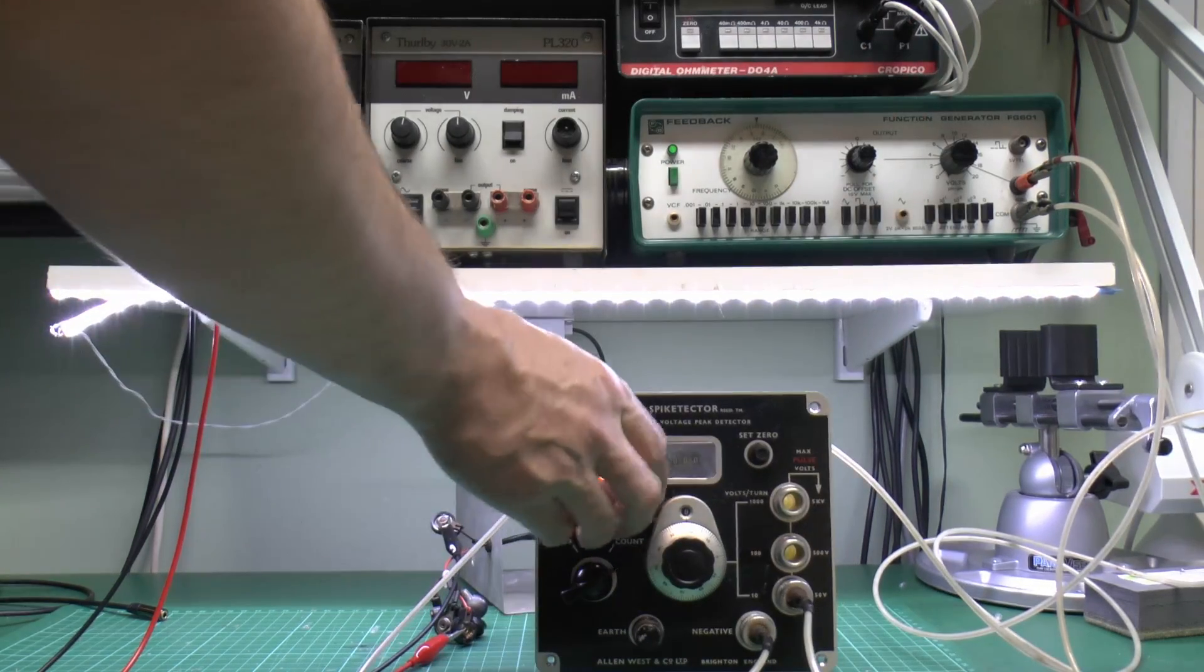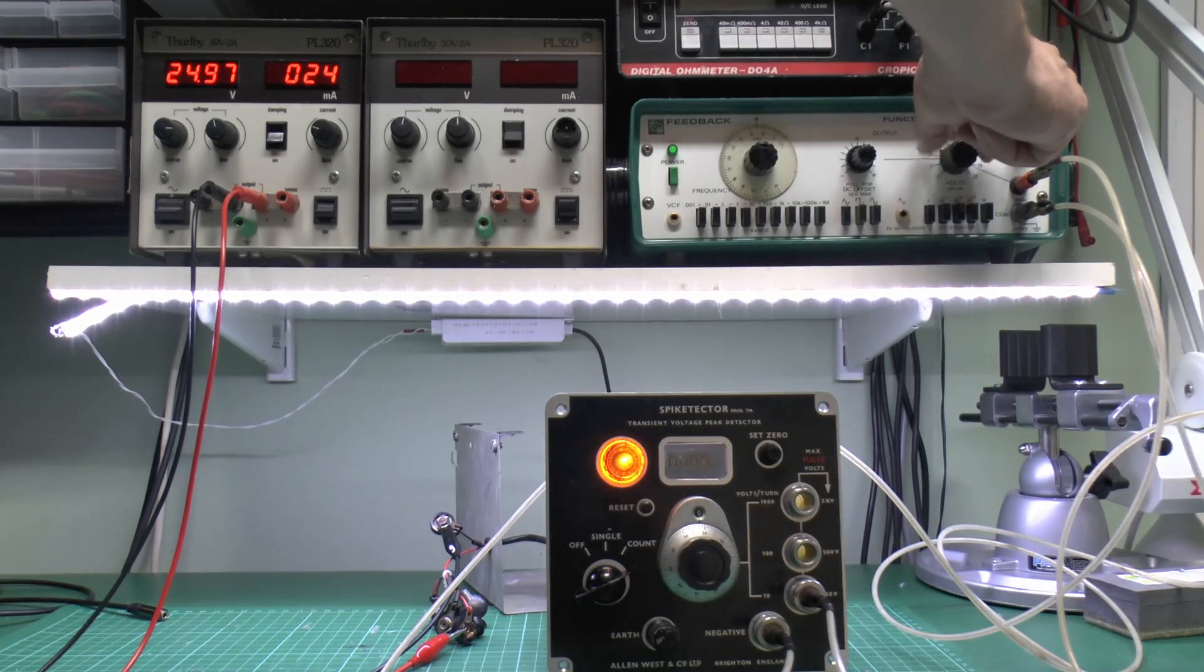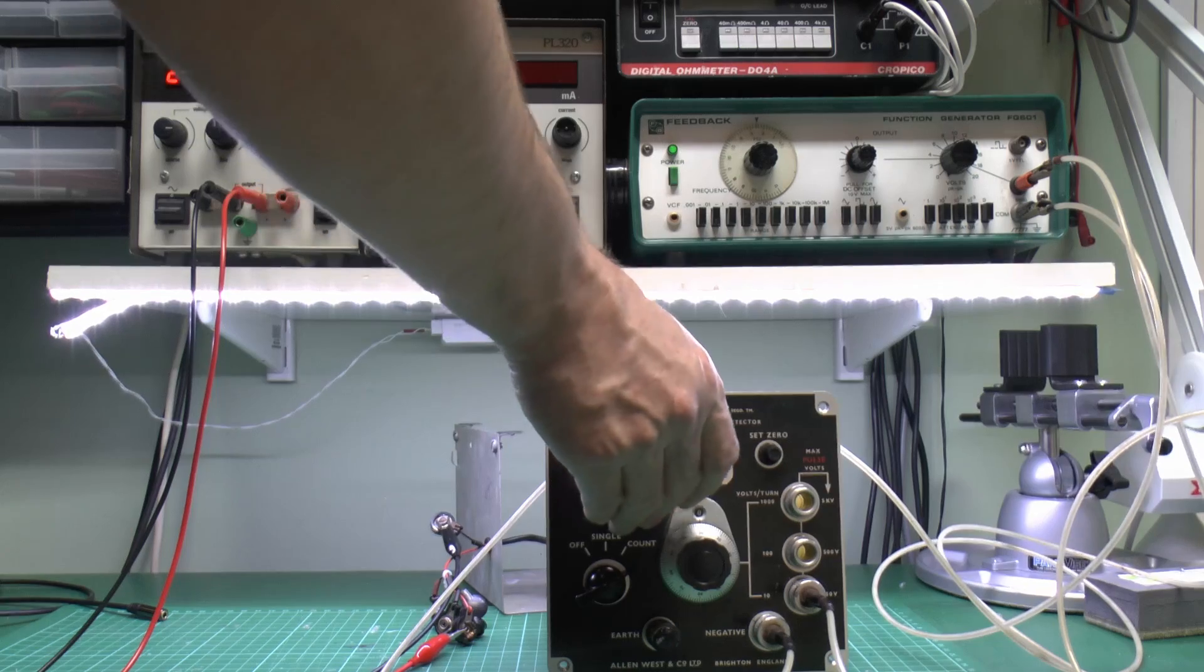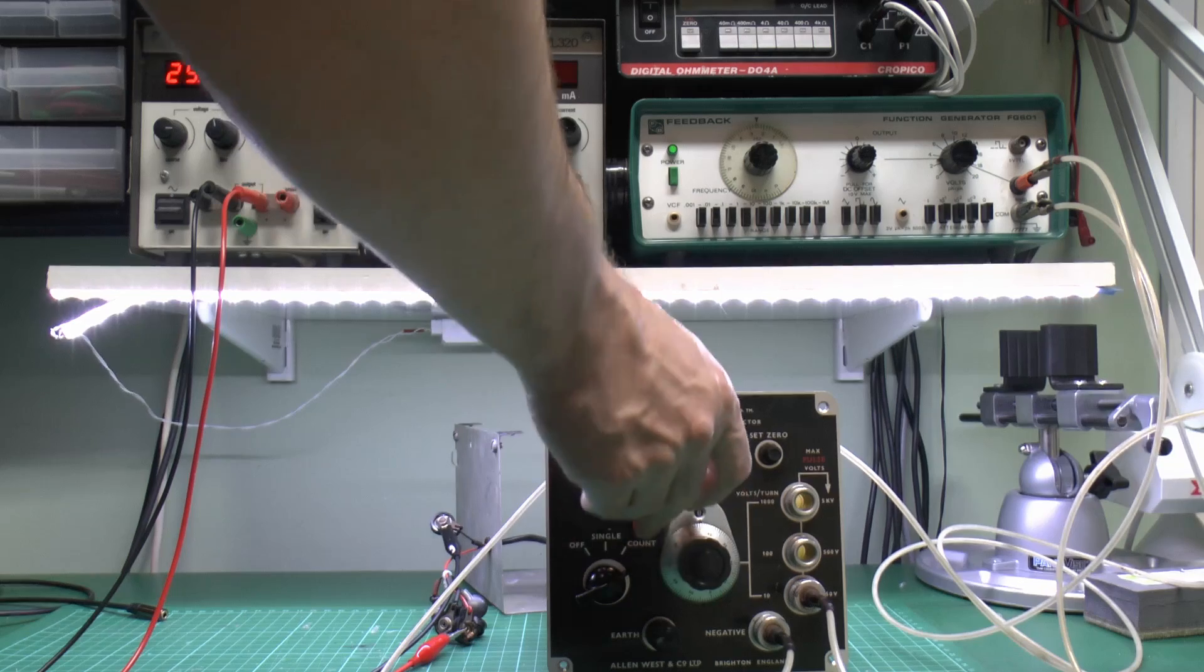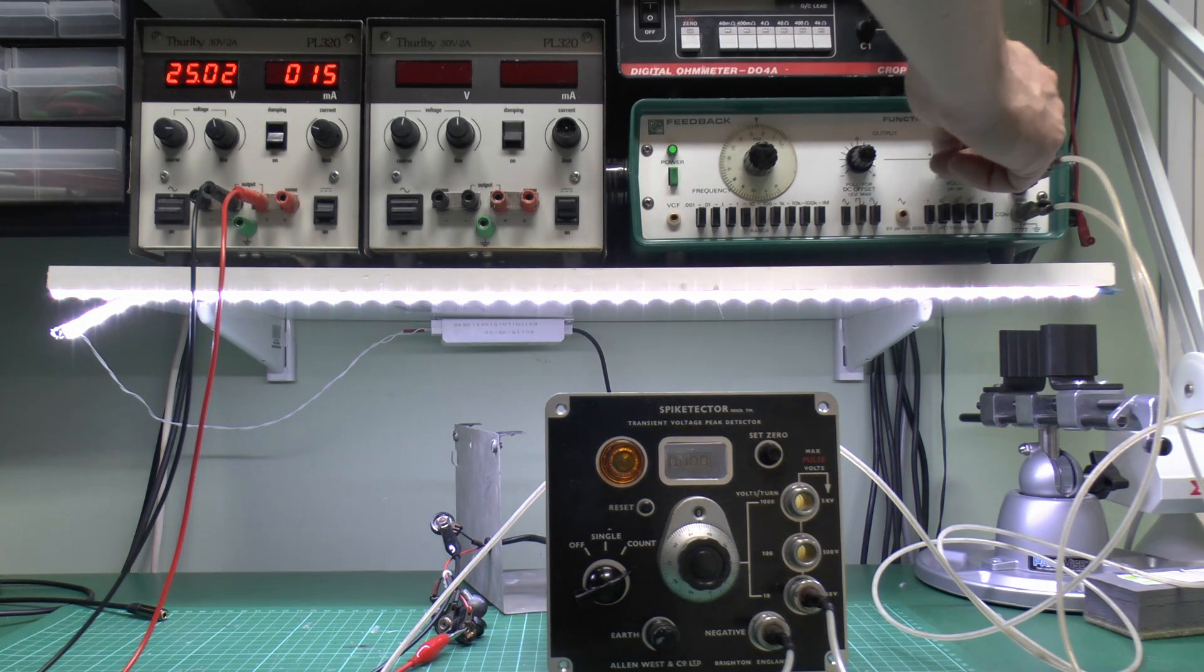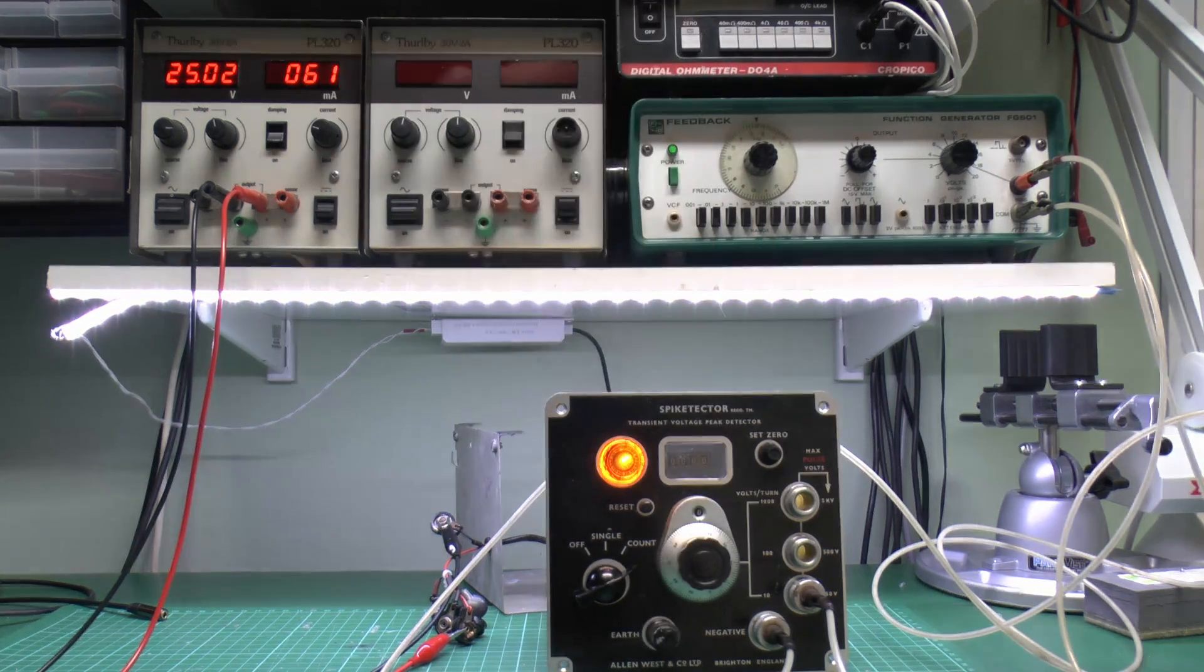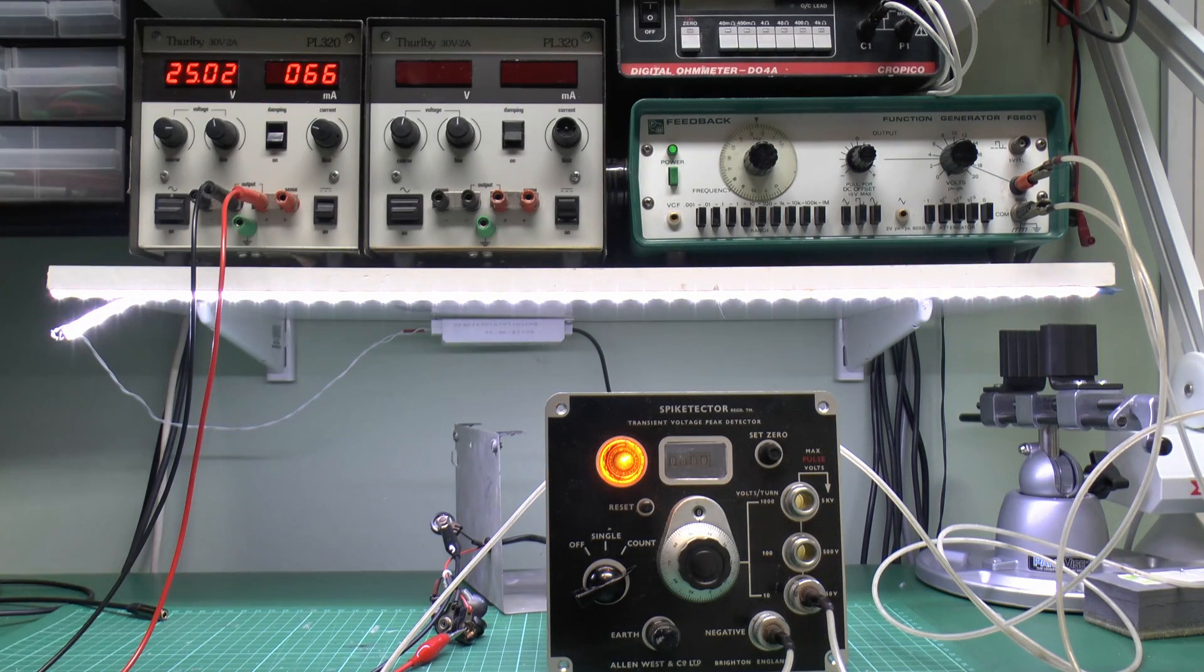If we turn that down, we can reset here, and then if we turn the knob up here, then it will come on when it gets to the level set. So some experimentation there may be needed to get the appropriate level, but basically no spike detected. And when we're creating the voltage above the level, then it will trigger and crucially stay on, even though we've turned down the output to minimum there. So that seems to work fine.